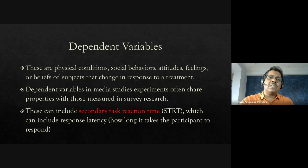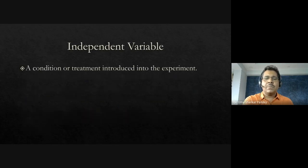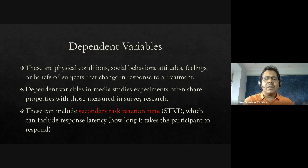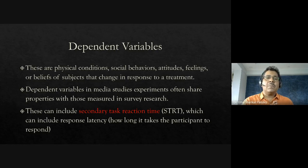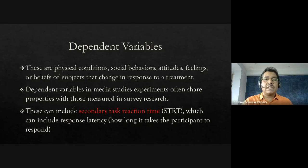Dependent variables are measured in much the same way as in survey research. The independent variable is the treatment or condition — comparable to a medicine or vaccine in clinical trials. In more sophisticated experimental research designs, dependent variables can also be measured automatically, for example through secondary task reaction time, measuring how long people take to respond to a click of a button.